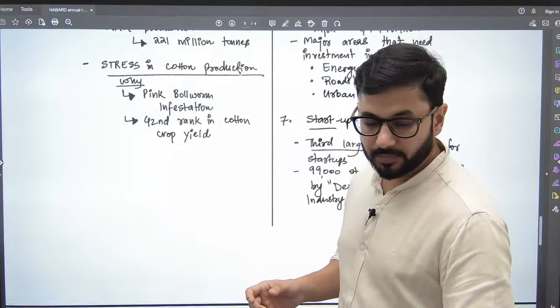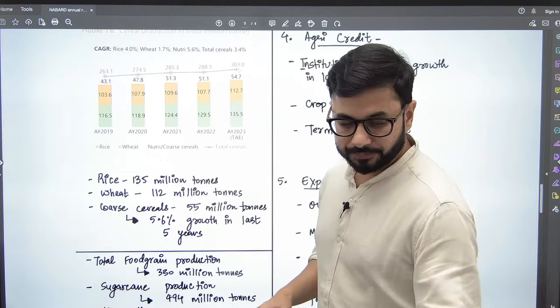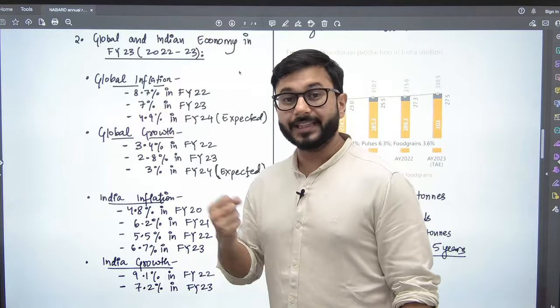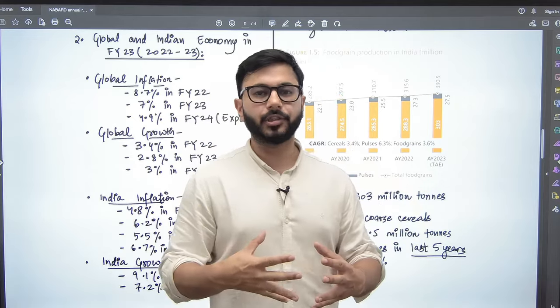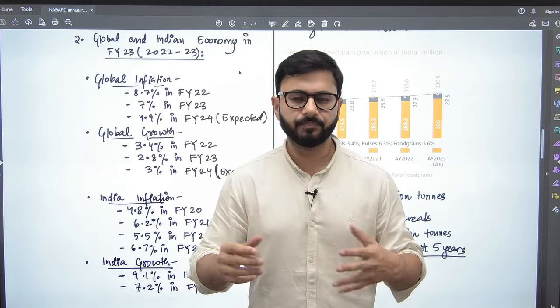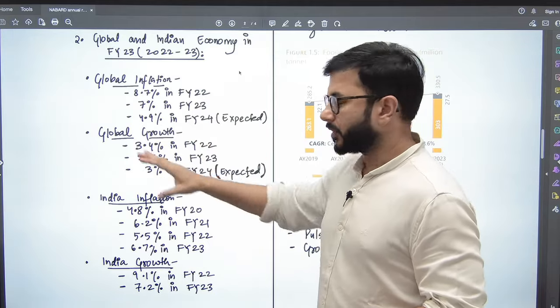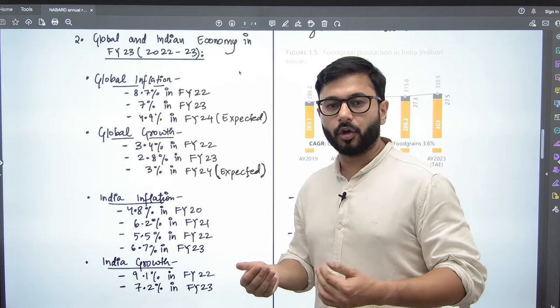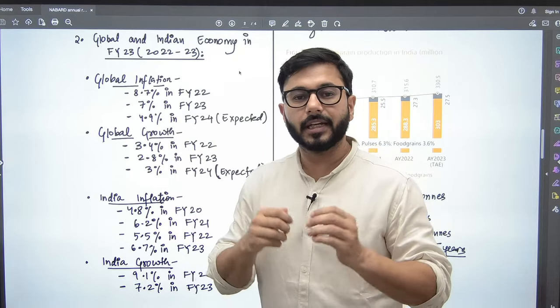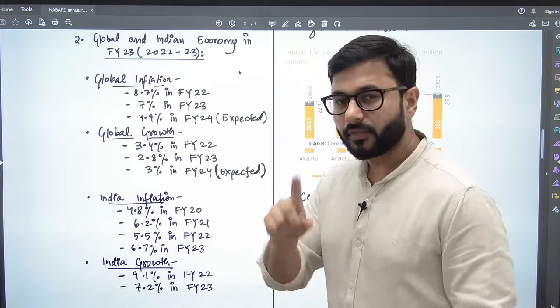Don't worry, jaise yeh poora ho jayega toh aapke saath isko share bhi karna mein shuru karunga. Is tarah se mein yahan par paper pe notes bana raha hoon annual report ke. And I always, whenever I make notes on paper, I always divide it into two parts - the page - because mujhe lagta hai ki zyada content aa sakta hai in that format on one piece of paper. And that is what you need when you're making notes on paper: you want to compress it to the extent that you have limited papers but maximum information and argumentation, whatever is the purpose of that note. Yeh kaun sa bhi PPT ka part. I hope this is clear.